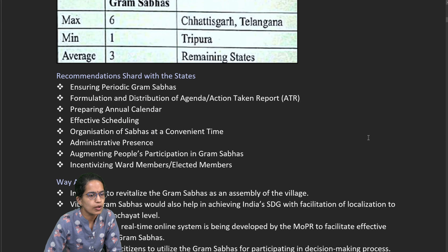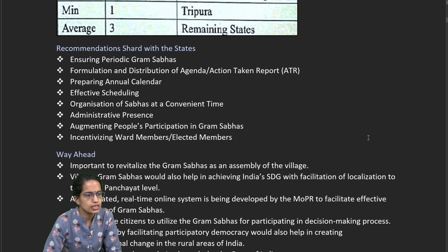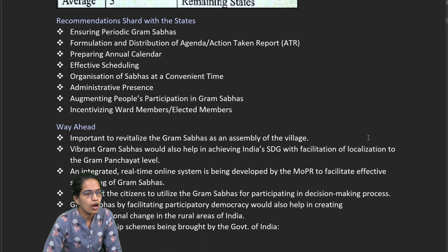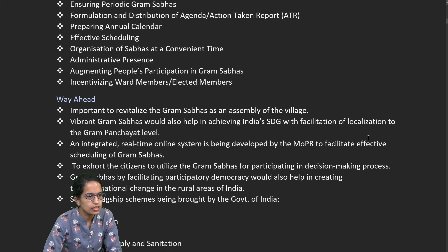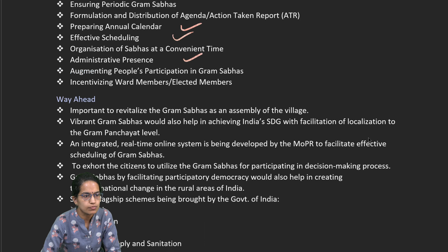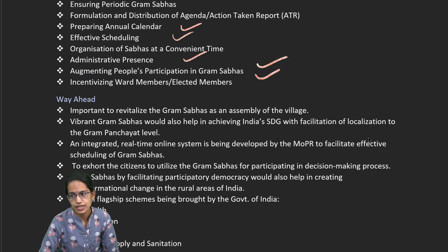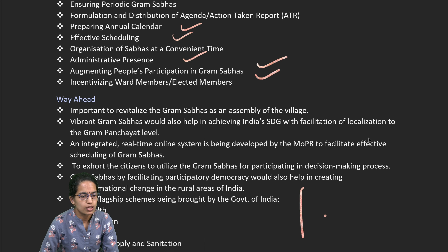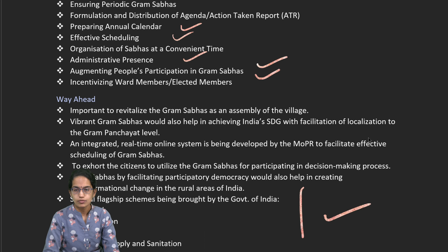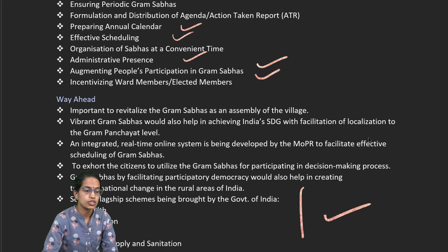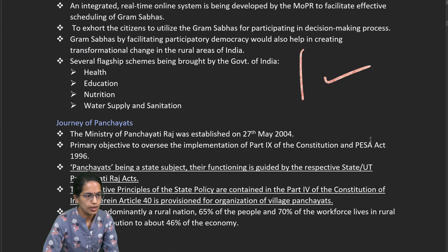The next topic talks about recommendations with the state — having an annual calendar, good scheduling, administration, people's participation, and incentivizing the members. Development has been focused mainly on schemes of health, education, nutrition, water supply, and sanitation.